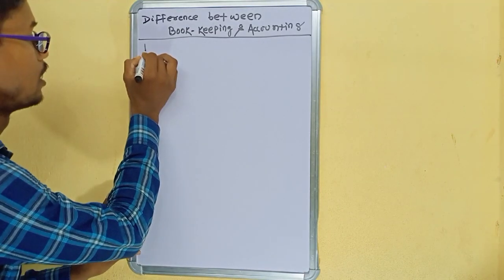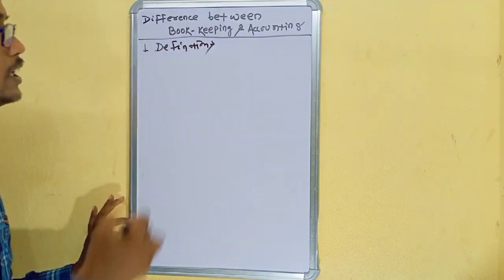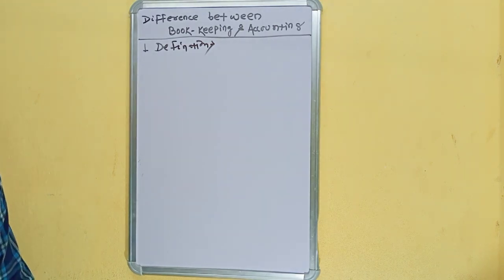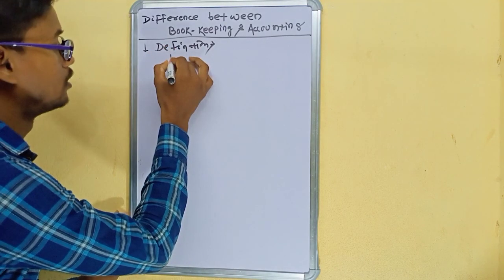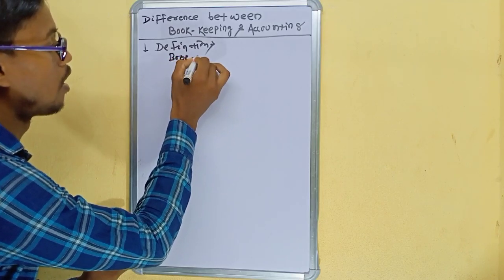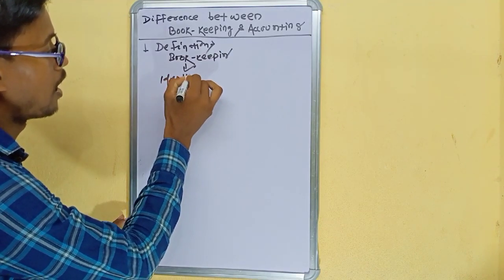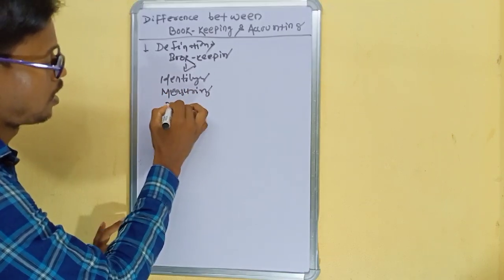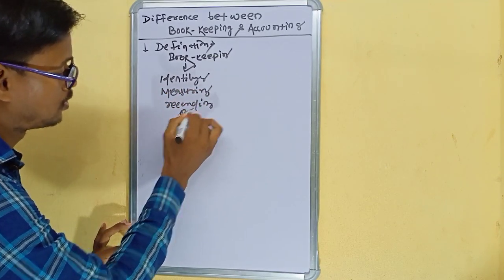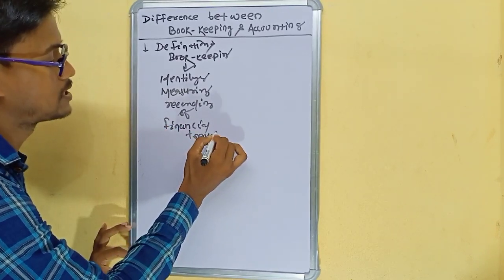The first term is definition. In bookkeeping, it involves identifying, measuring, and recording of financial transactions.